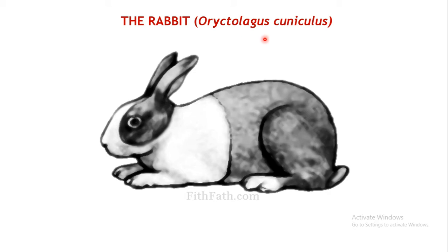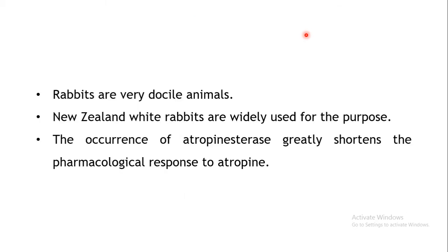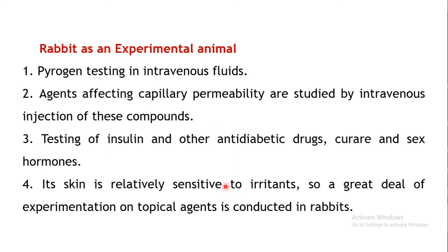The next animal is the rabbit; the species name is Oryctolagus cuniculus. Rabbits are quite docile animals that hardly make any aggressive movements and are easy to handle carefully. New Zealand white rabbits are most commonly used. One speciality is the occurrence of atropine esterase, an enzyme that hydrolyzes atropine, making rabbits insensitive to atropine.